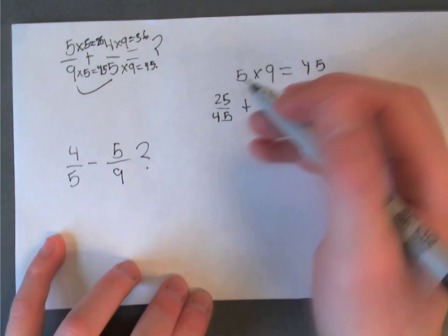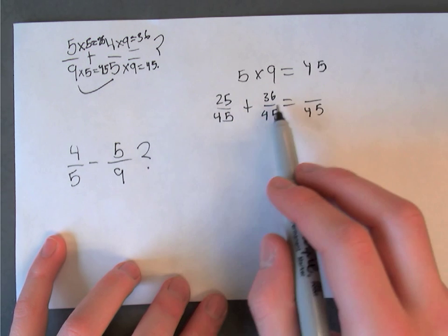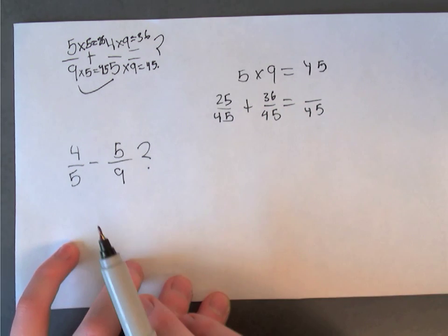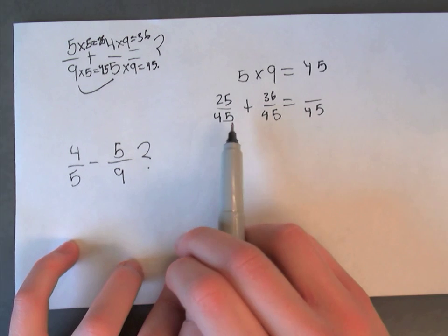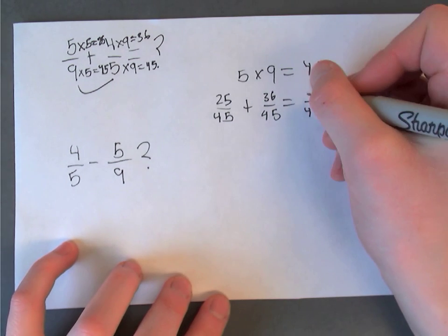Okay so now you just add the two numerators. 25 plus 36. So 20 plus 30 is 50, 5 plus 6 is 11. So that's 61.